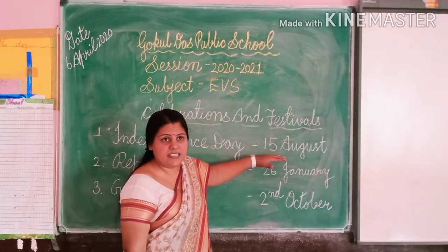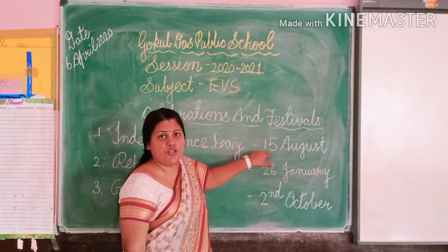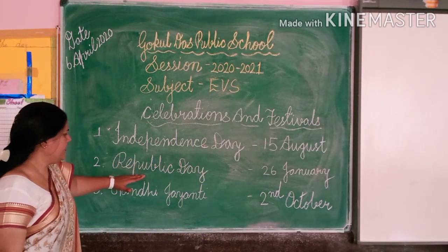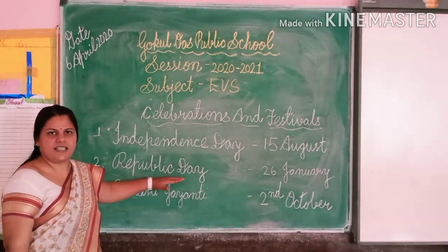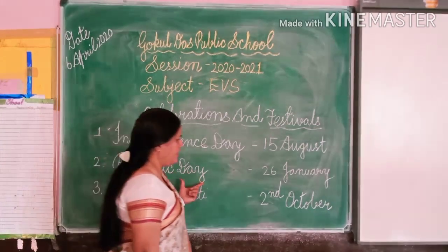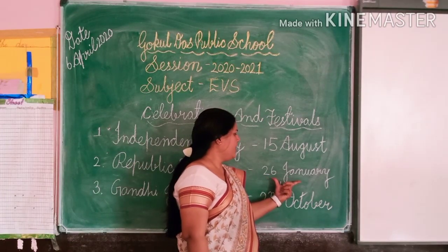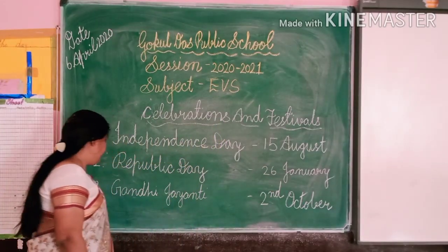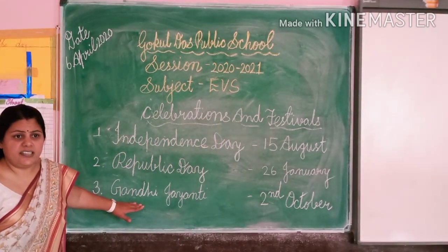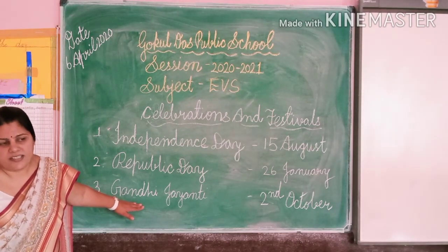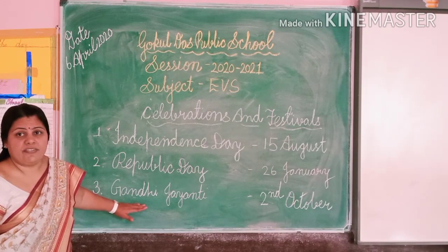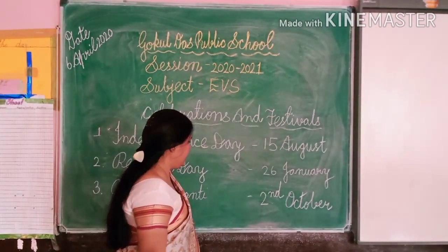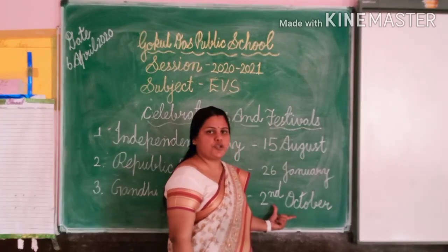Keep this date in your mind, my dear students. Our second festival is Republic Day — we celebrate Republic Day on 26th January. And our third festival is Gandhi Jayanti. Gandhiji is our Father of the Nation. We celebrate Gandhi Jayanti on 2nd October.